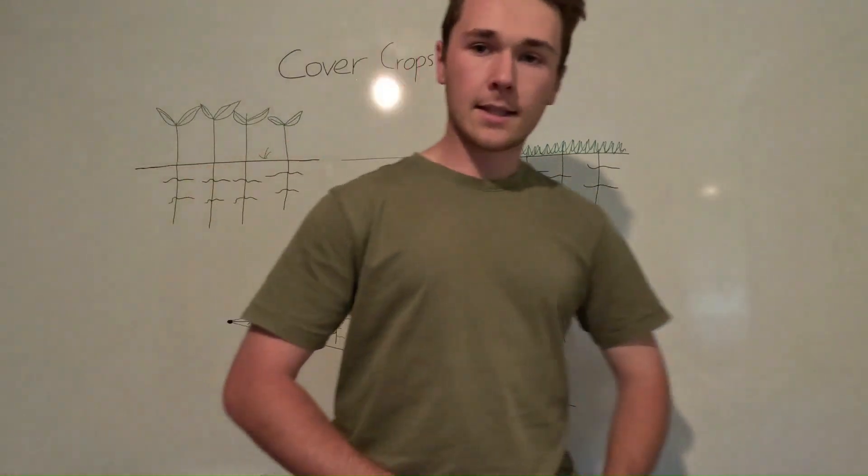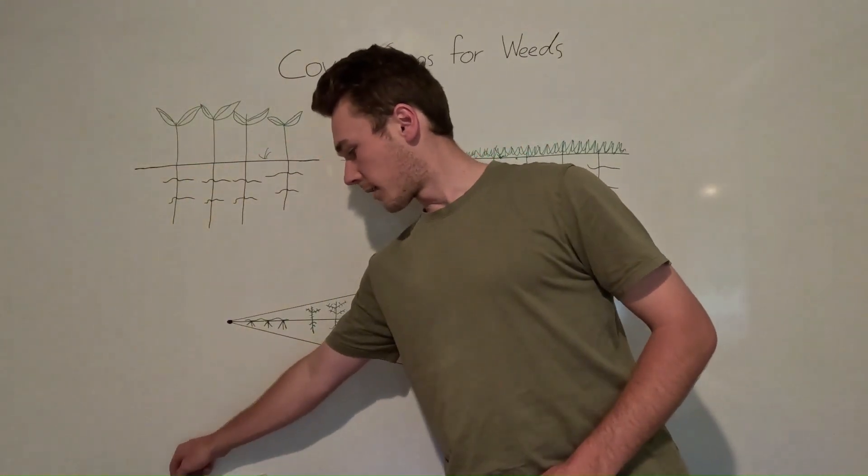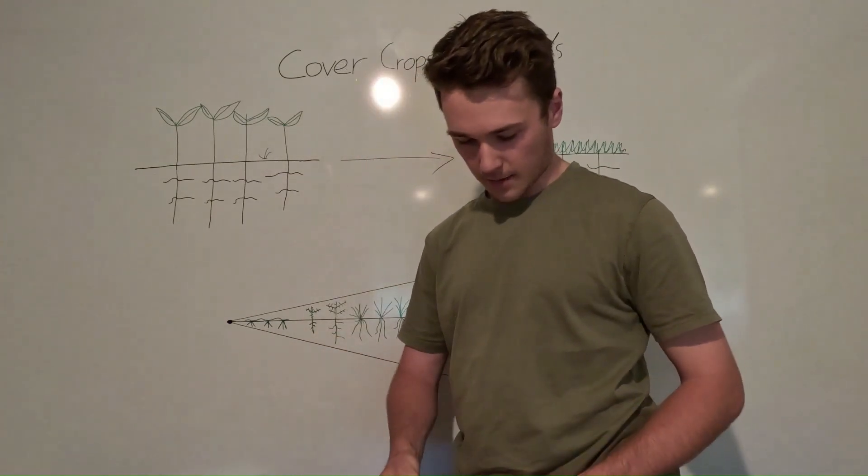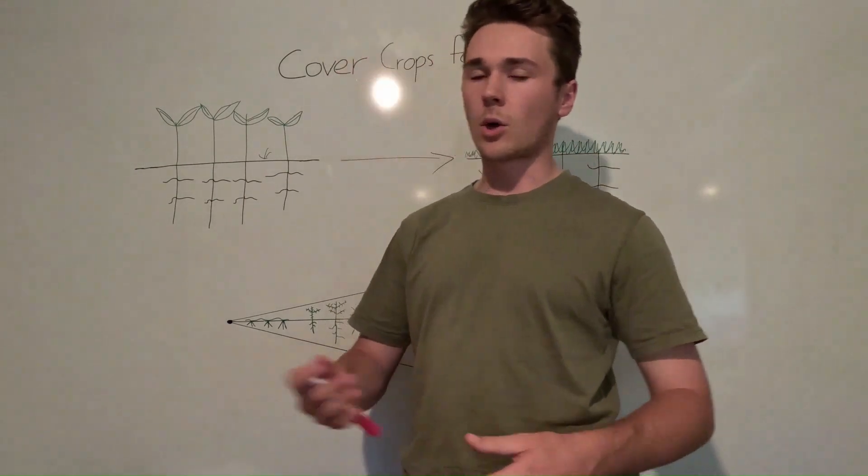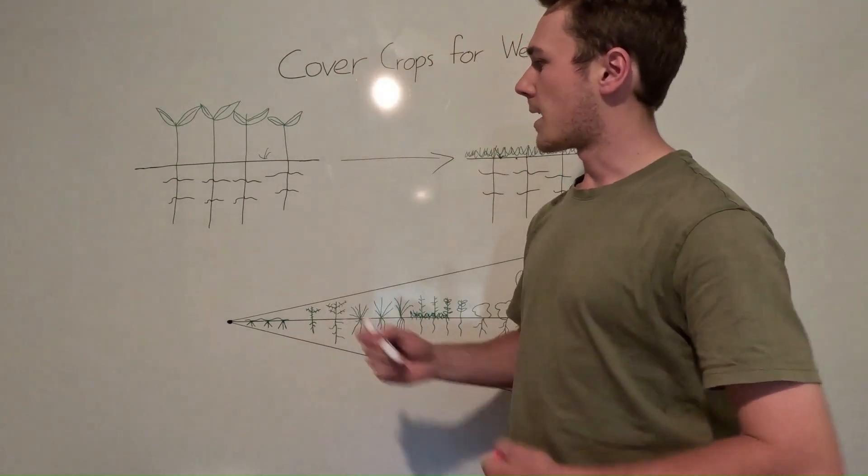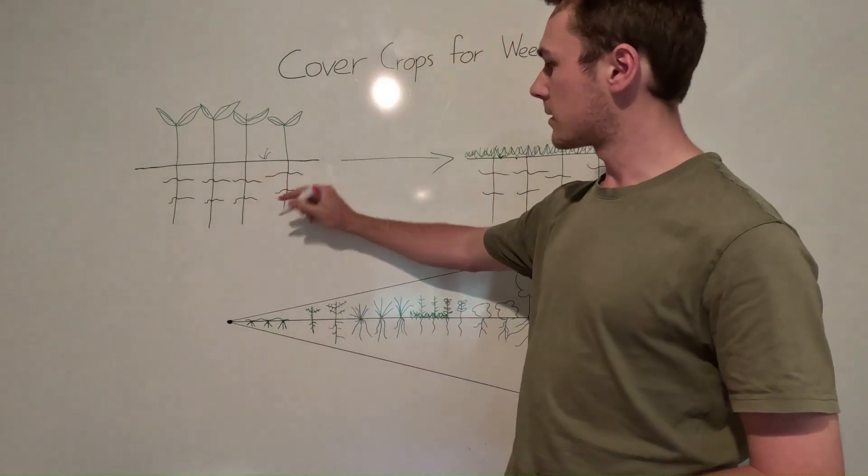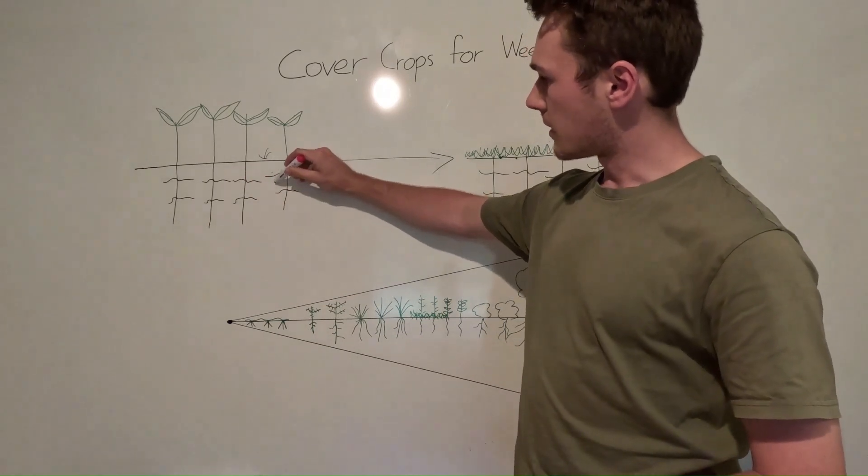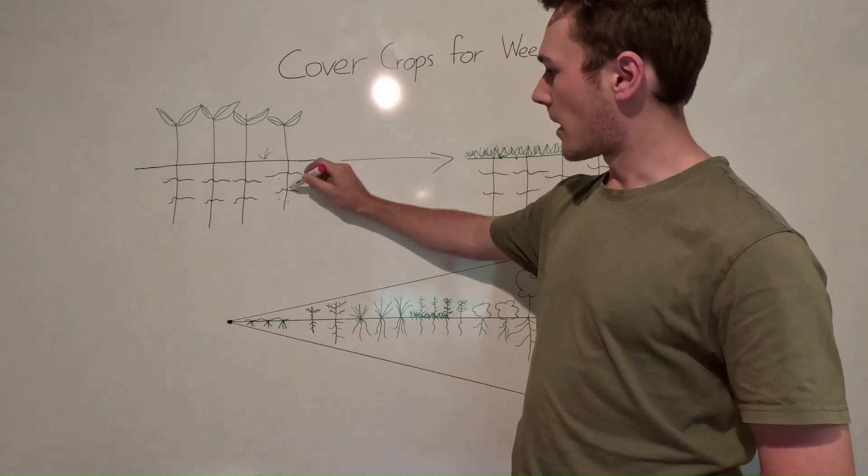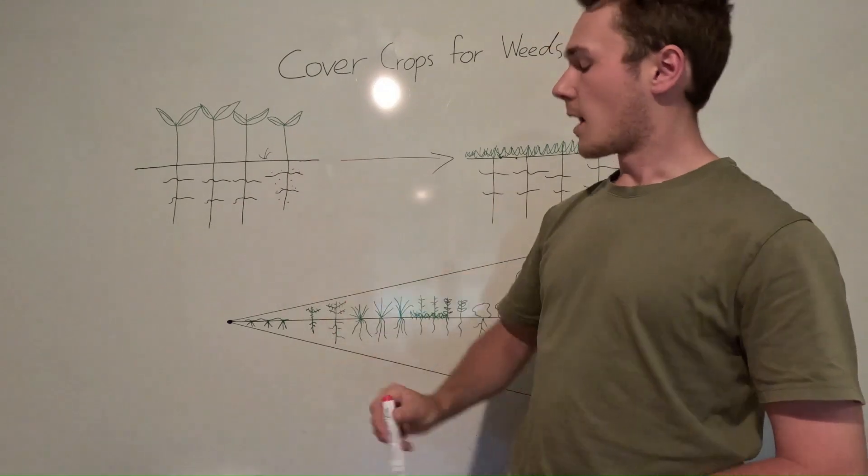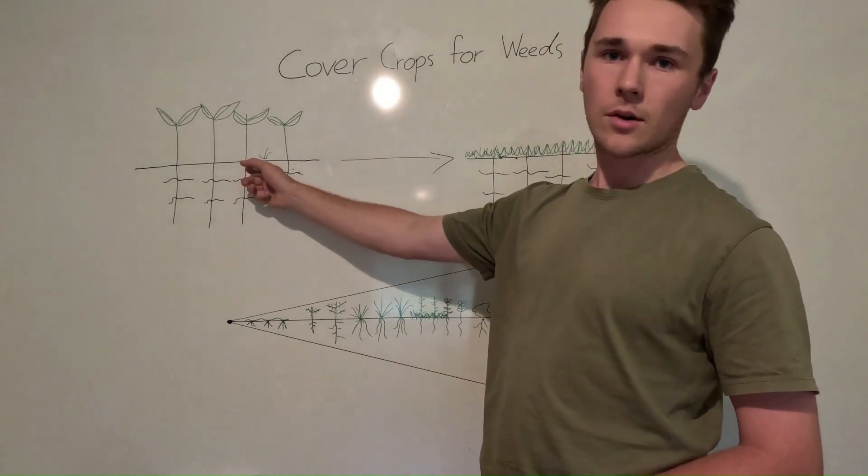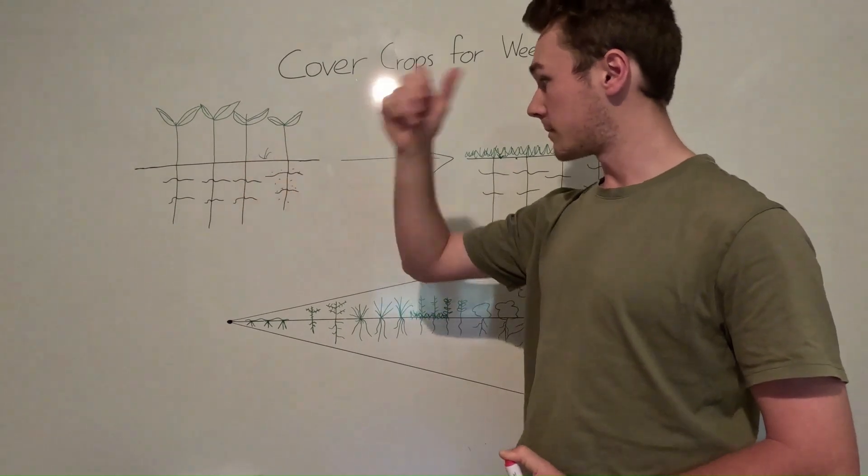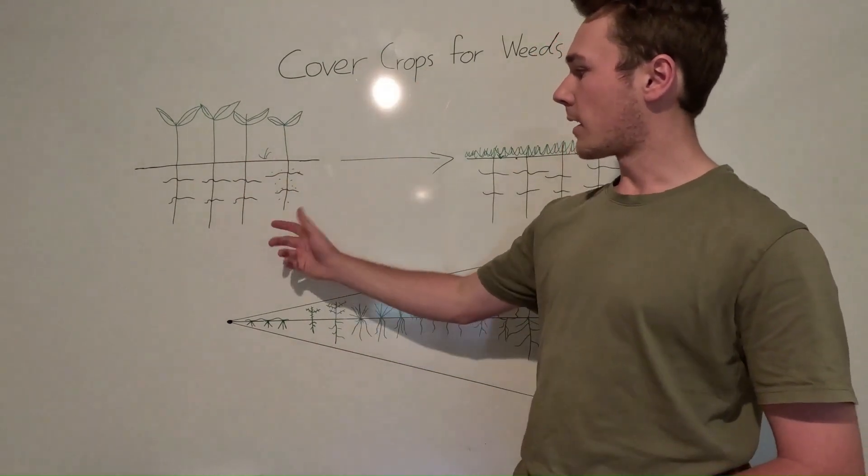Another really big one is the allelopathic effect, which occurs when plants like vetch and rye put out pretty much toxins to inhibit the growth of other plants. So these plants can be throwing out allelopathic compounds which would prevent the germination and inhibit the growth of weeds. And so that is our second one, allelopathic effect.